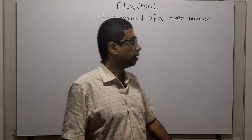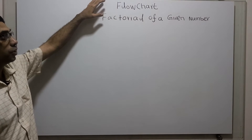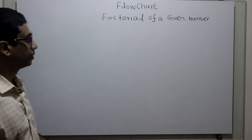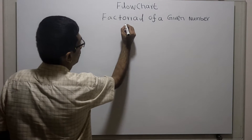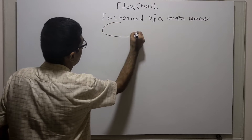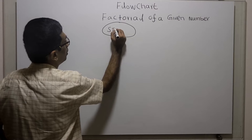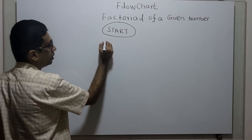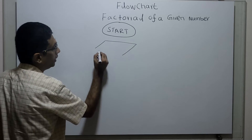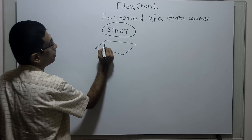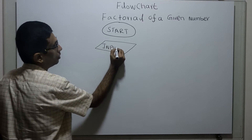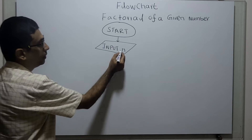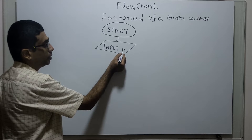Hello friends, we are going to draw a flowchart to obtain the factorial of a given number. Logical start on the flowchart. I am obtaining a number from the user — input n — so n is the variable I am obtaining from the user.